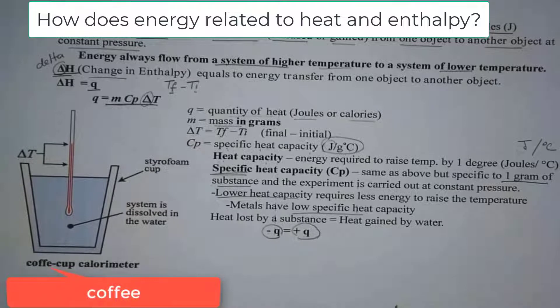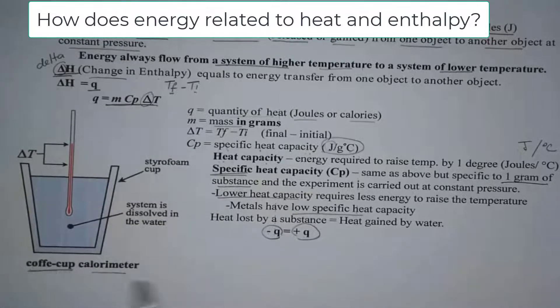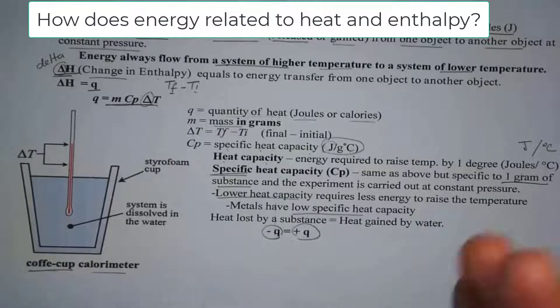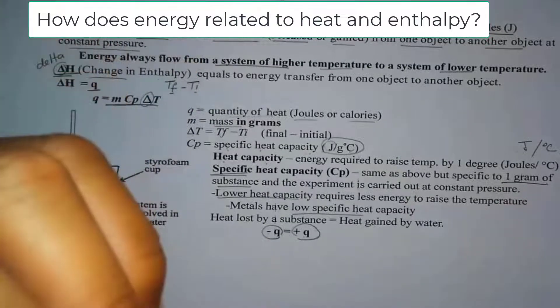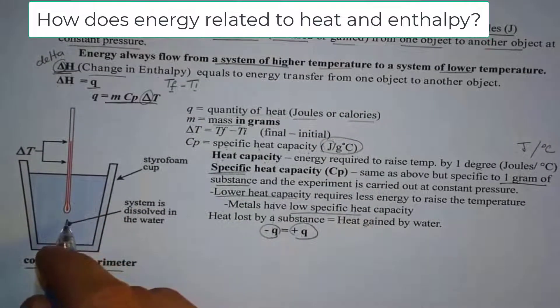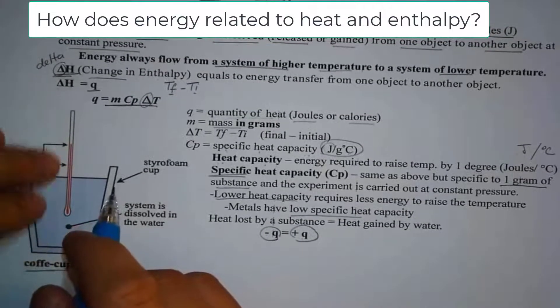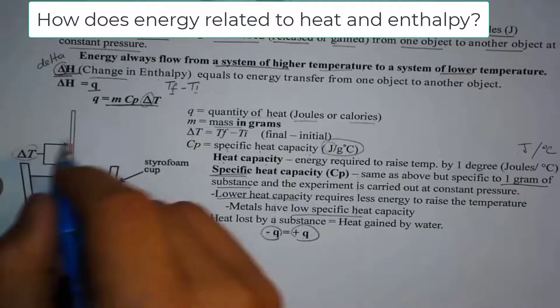And one of the most common equipment that we use to determine how much energy is being released is a coffee cup. Think of the word coffee. We use a coffee cup. And a coffee cup, if you haven't held a coffee cup before, it is very well insulated. So that means all the heat has been released by the system in this container. It will be changing the temperature. So we can measure the change in T.